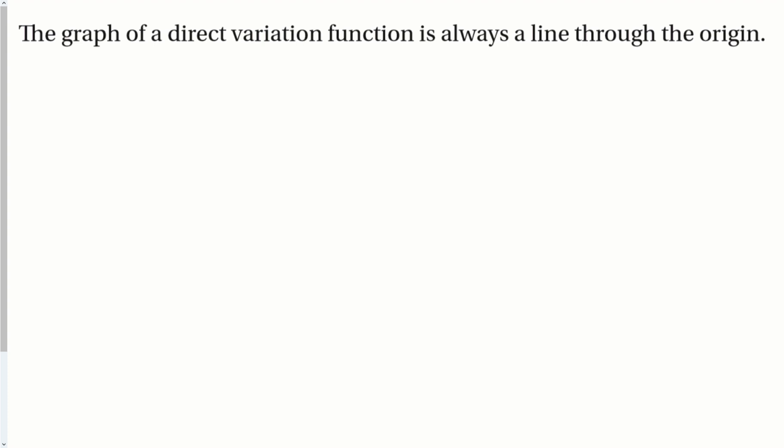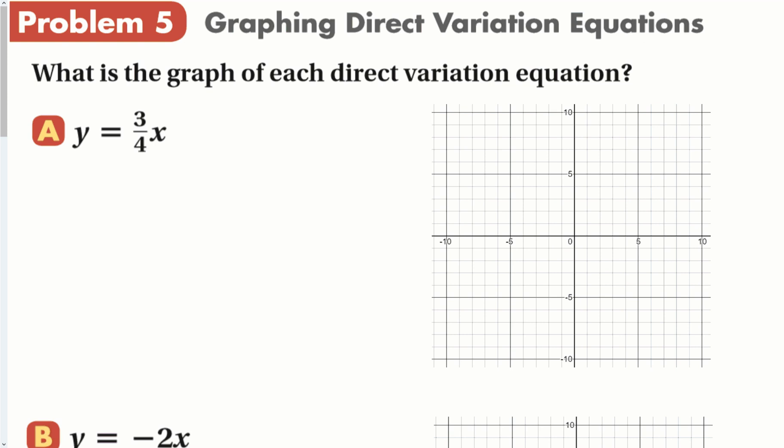The graph of a direct variation function is always a line through the origin. In this chapter, we're going to be graphing a lot of lines. We're going to start with the simplest form here of a direct variation equation. In the next couple sections, we'll talk about different techniques to put this equation on the graph. But we're going to start with the most basic one, making a table. I'm going to plug in zero and get zero. Now I'm going to plug in numbers that work better with this fraction, like my input of four.